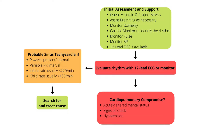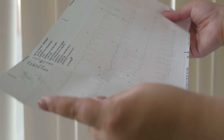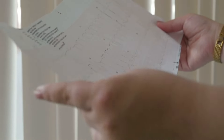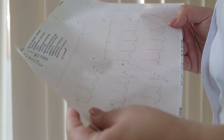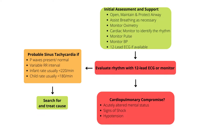We should also perform a 12-lead ECG if available, but we should not delay treatment. Evaluate the 12-lead ECG and determine if the rhythm is sinus tachycardia or a tachycardia arrhythmia. If it is sinus tachycardia, we should see P waves which are normal looking, with an infant rate below 220 per minute and a child rate below 180 per minute. We should also search for and treat the causes.